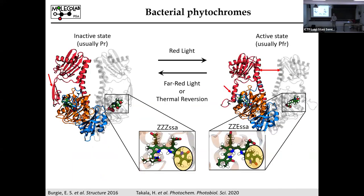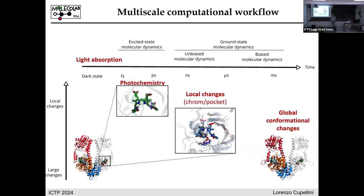A clarifying question: in the scheme, the ground state is used for sampling to set up the excited state dynamics. The ground state is used for sampling before the excited state, but also after the photochemistry there is dynamics that happens in the ground state, after the activation.